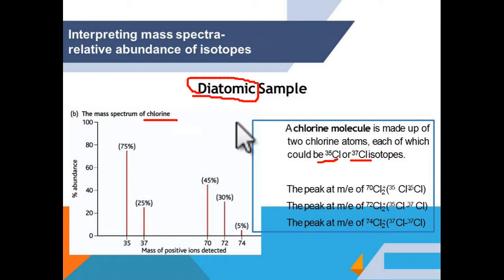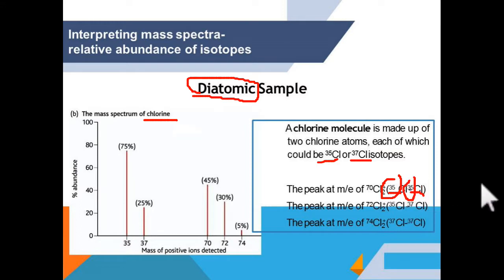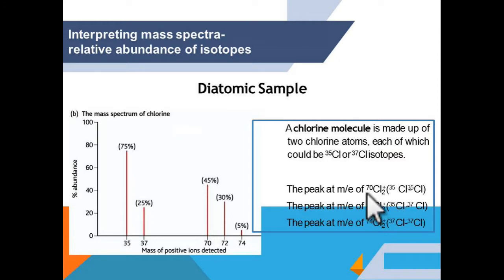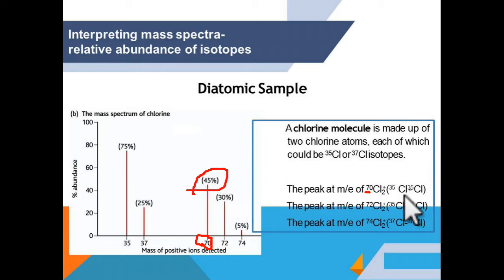We might think about which combinations will produce Cl2. A diatomic gas like chlorine has Cl2, and the combination could be Cl-35 with Cl-35. Using isotope chlorine-35 and 35, it gives a molar mass of 70. By referring to this peak, we notice this is your 70, and this line actually corresponds to Cl2 with the isotope combination of 35 and 35. It could also be another combination: the combination of Cl-35 and Cl-37. When 35 and 37 are combined, they still give Cl2 with a total molar mass of 72.